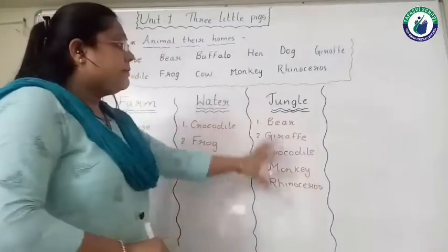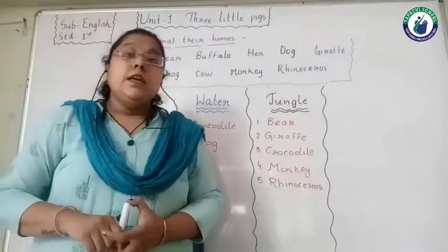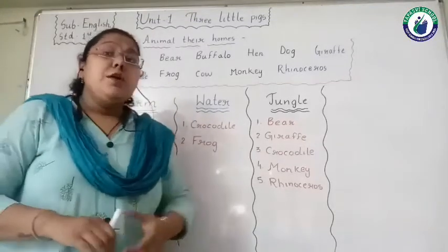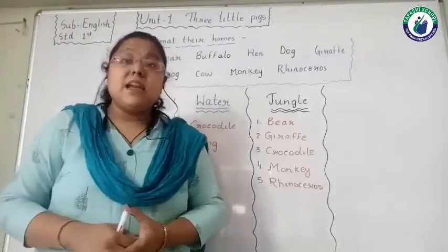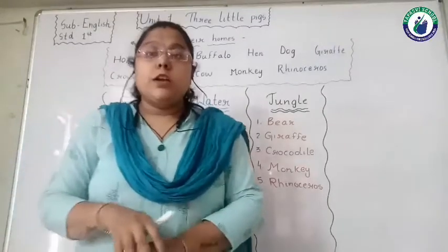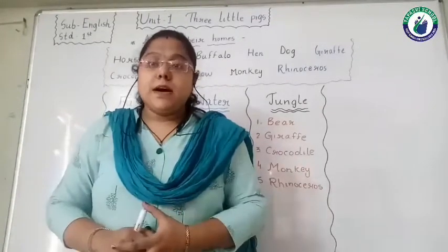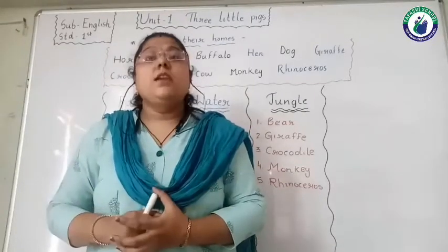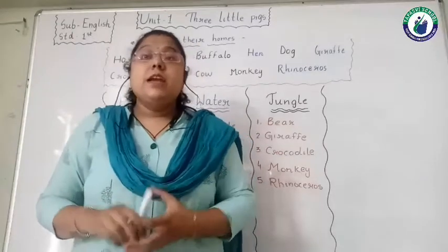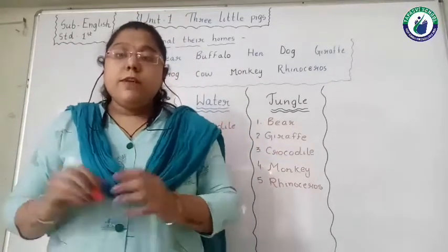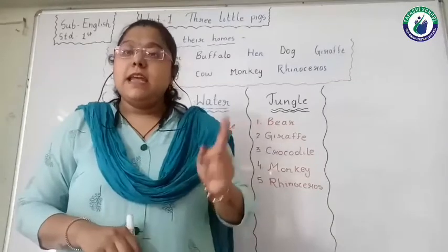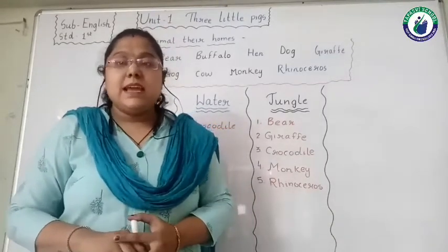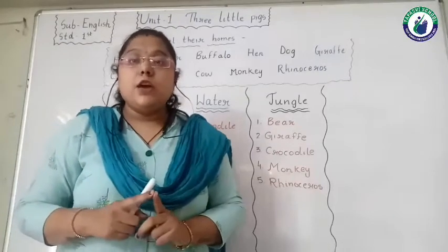So now we have completed this activity. Here you can see we have written only two animals in the water column, but so many animals live in water — like fish, octopus, and others. So in today's lecture, what have we learned? We have learned about animals and their homes.